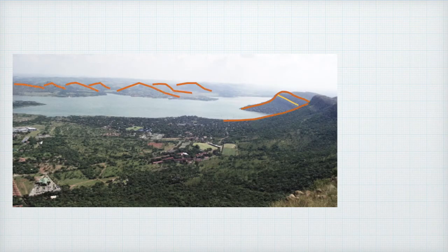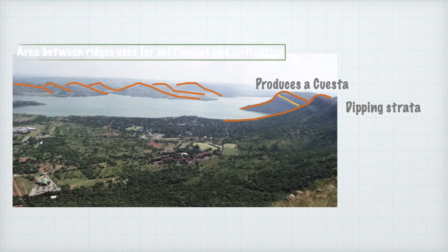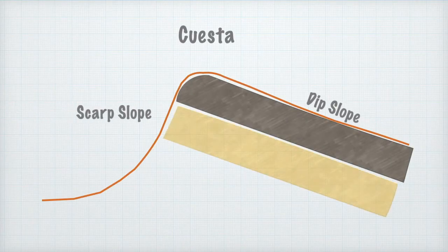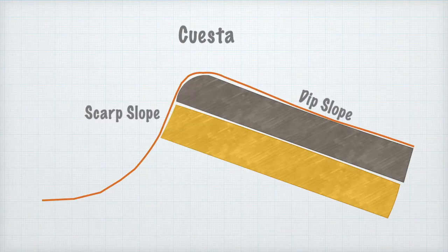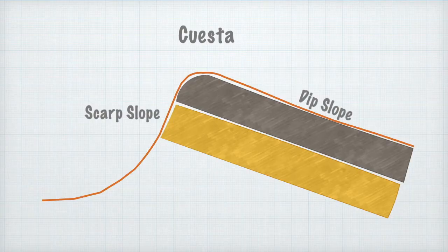Within the Magaliesberg range we see a number of hills dipping, and we get dipping strata producing a cuesta. Development happens between those ridges. Now let's look carefully at the cuesta — can you see the cuesta has a steeper scarp slope and a gentle dipping slope? It's called a dip slope because those layers are dipping or tilted, and usually the top of the dip slope might then have your resistant cap rock.